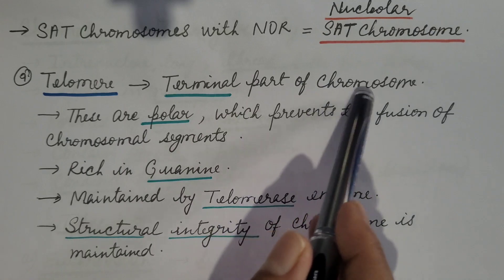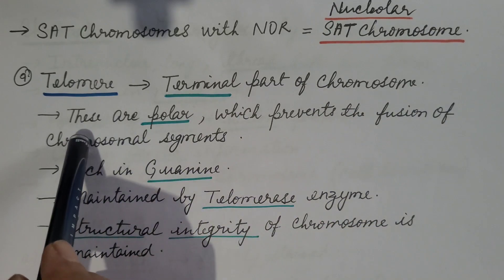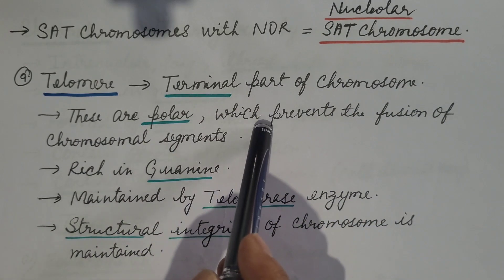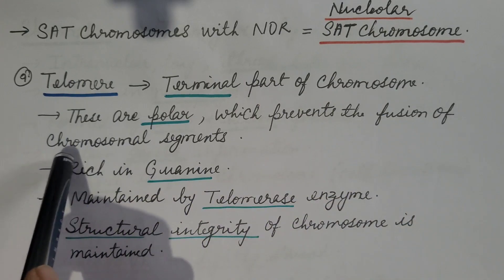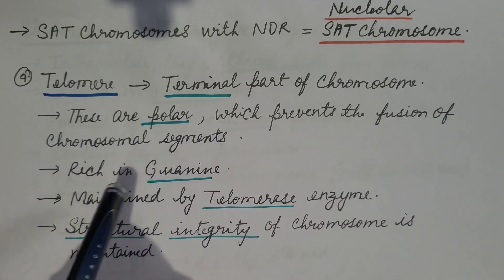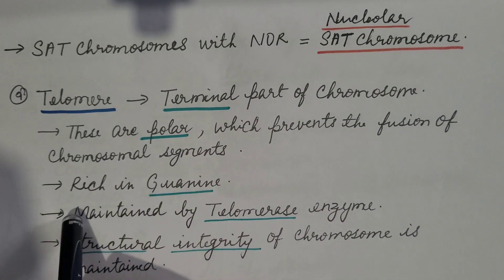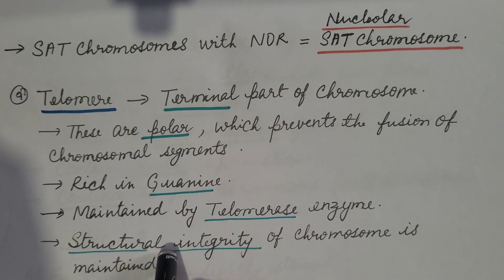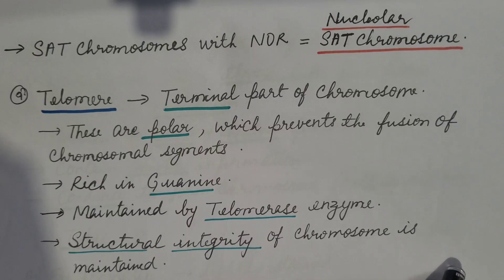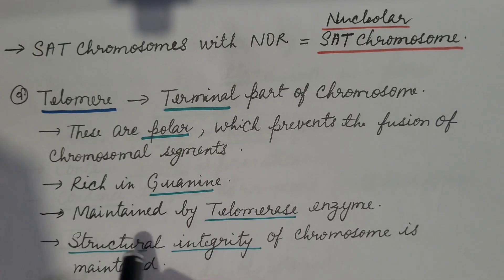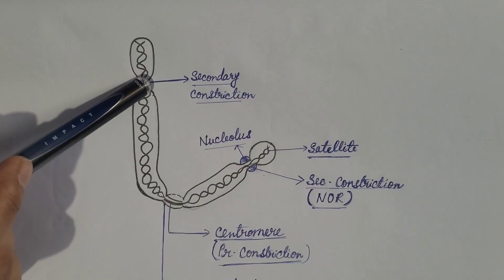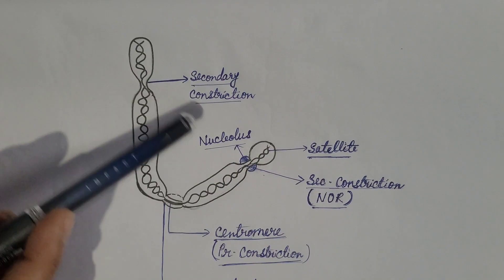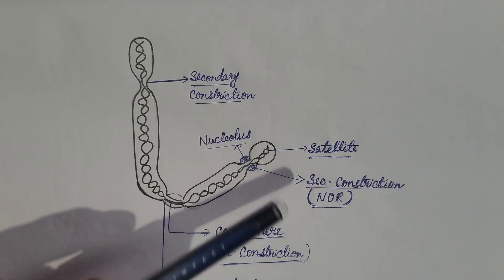The last component is the telomere — the terminal parts of chromosomes. Telomeres are polar, which prevents fusion of chromosomal segments. They are rich in guanine and are maintained by the enzyme telomerase. Therefore, the structural integrity of the chromosome is maintained by telomeres.